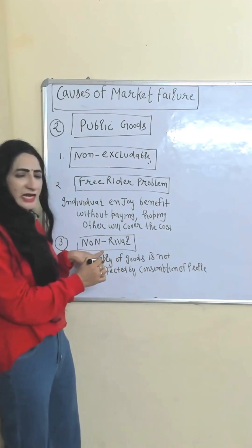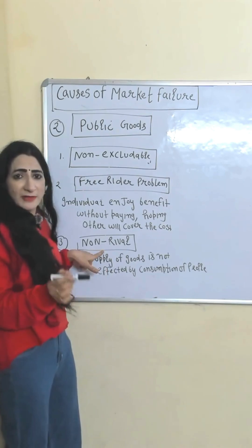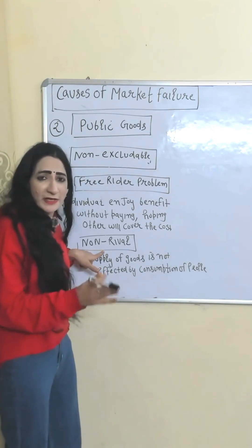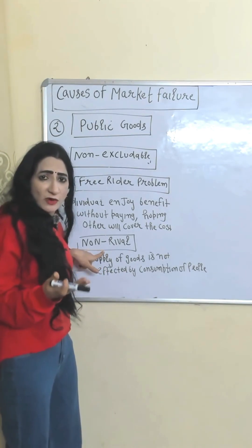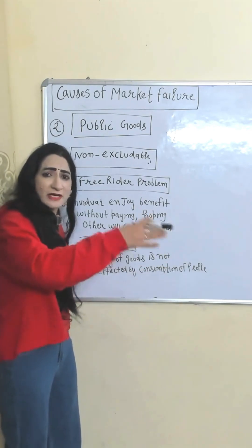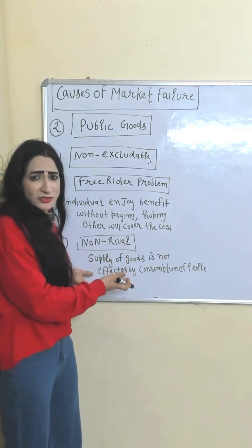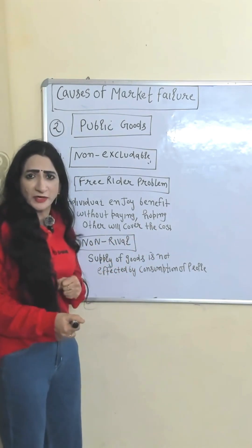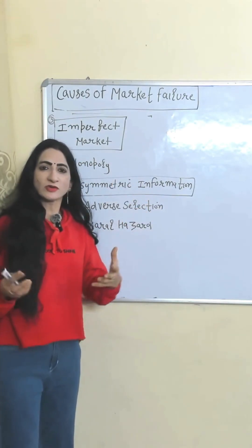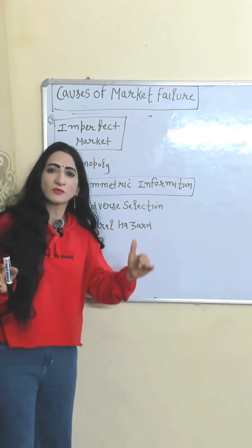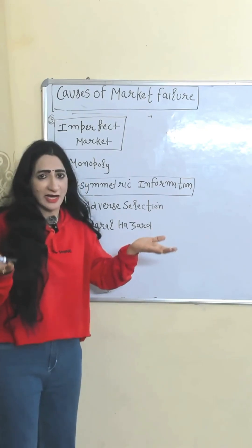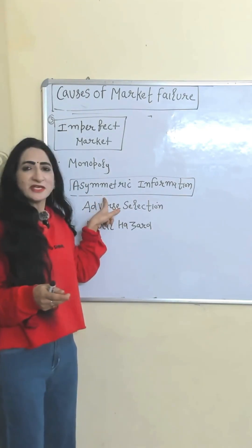Public goods are also non-rival, meaning the supply of goods does not reduce with consumption. For example, in the case of street lights, supply does not reduce no matter how many people are using them, though eventually it may reduce production. Imperfect markets, like monopolies, also cause market failure because monopolies exploit consumers by charging higher prices.